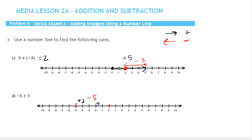We get right to here, and this is our final result. So we go 5 in the negative direction for negative 5, and then 3 in the positive direction. Notice our final result is negative 2.